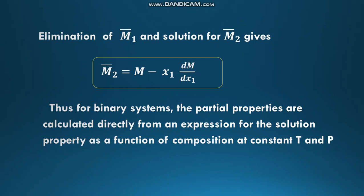Elimination of M1-bar gives the equation for M2-bar: M2-bar equals M minus x1 dM/dx1. These are the two final equations for the binary solution. For binary systems, the partial properties are calculated directly from an expression for the solution property as a function of composition at constant temperature and pressure. From solution properties we can calculate the partial properties as a function of composition.